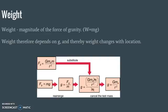Our weight depends on little g, the gravitational field strength, which changes depending on your location and distance from the object. Looking at the derivation: the force of gravity equals mass times little g, so g equals gravitational force divided by mass. We can then plug in the generalized form of Newton's gravitational force.